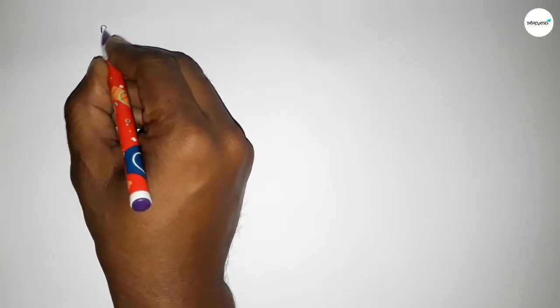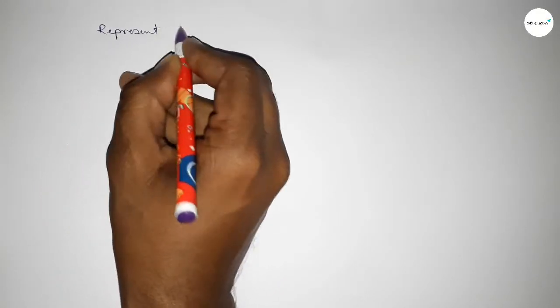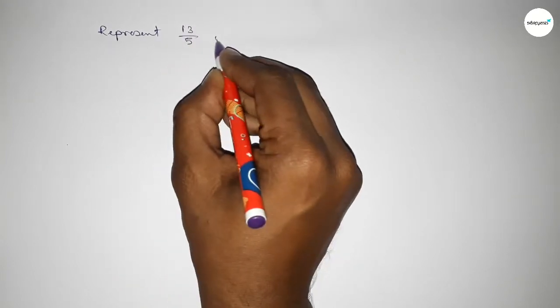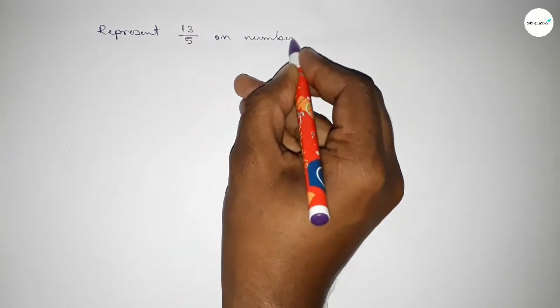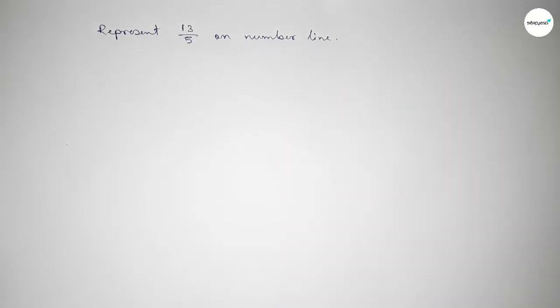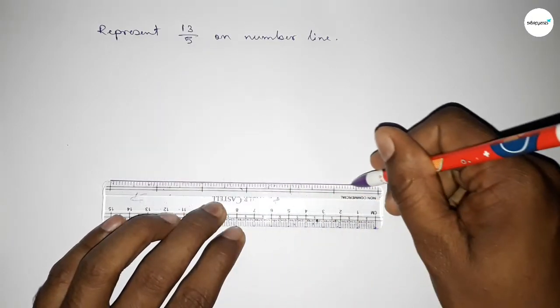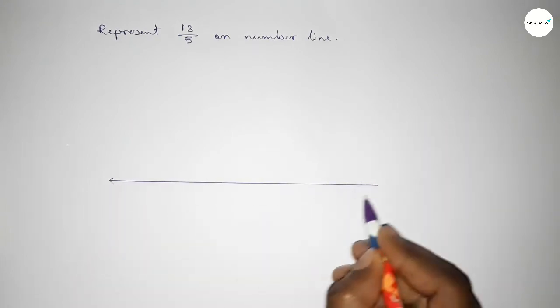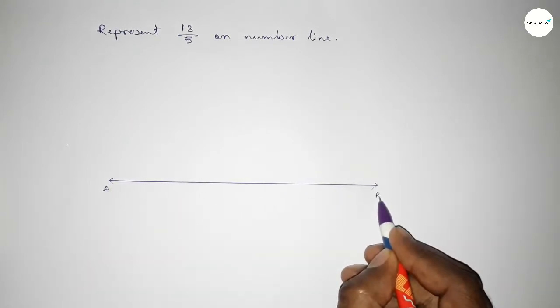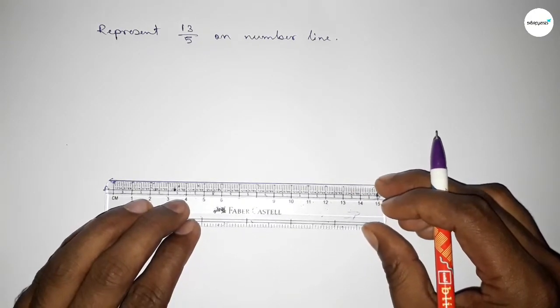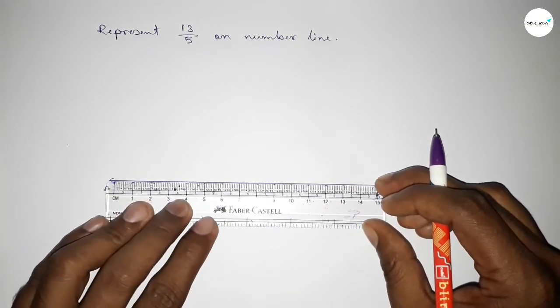Hi everyone, welcome to SI Share Classes. Today in this video we have to represent 13/5 on a number line. So let's start. First of all, we draw the number line by drawing a line with arrow marks on both sides. This is line AB. Next, we mark the numbers on the line.